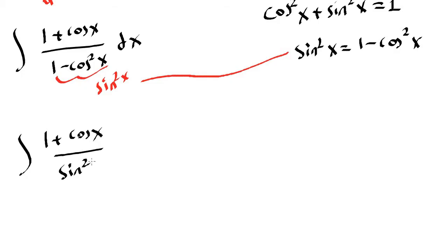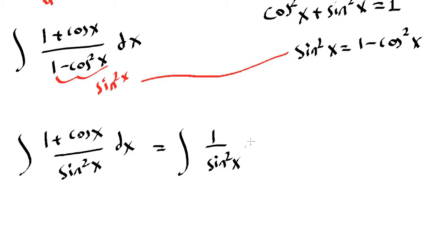Now we have a common denominator, so we can separate the fractions: the integral of 1 over sine squared of x, plus the integral of cosine x over sine squared of x.